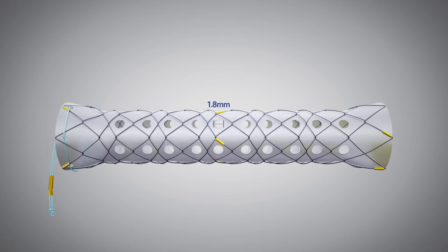There are multiple holes with the size of 1.8 mm in diameter. The flare ends can reduce the migration risk.